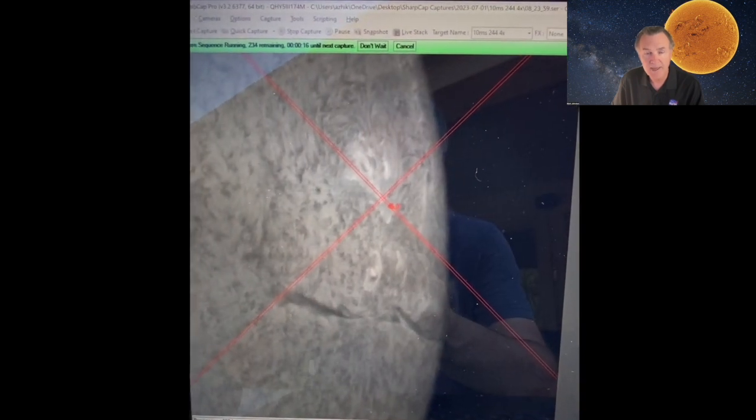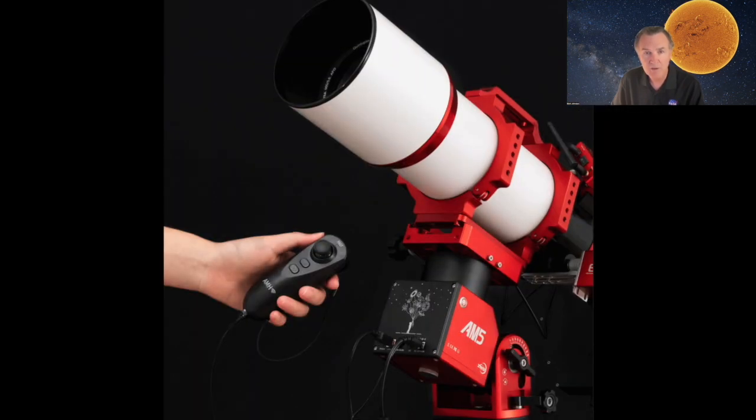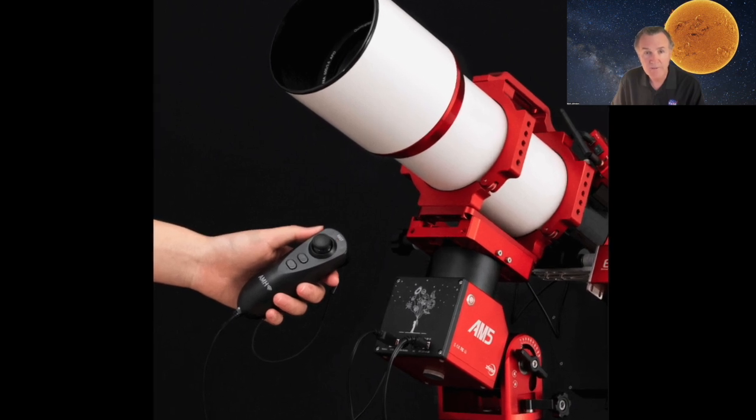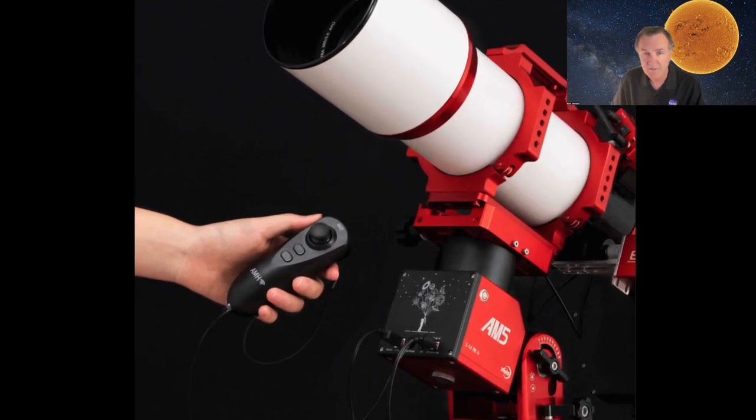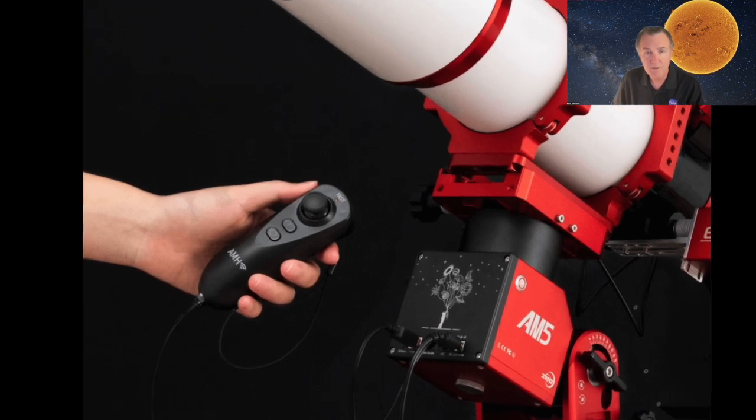The mount is ASCOM compatible, so you could use NINA if you wanted to. It has a hand controller. Some reviews of the AM5 say the hand controller isn't very helpful, but I disagree.